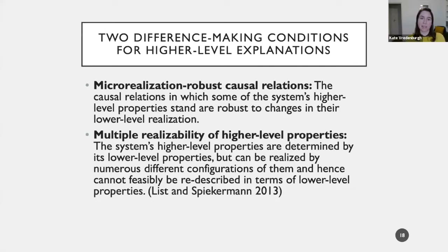To make this argument more precise, I draw on two conditions from List and Spiekermann. First, micro-realization robustness: the causal relations in which some of the system's higher-level properties stand are robust to changes in their lower-level realization. Second, multiple realizability: the system's higher-level properties are determined by its lower-level properties but can be realized by numerous different configurations of them, and hence cannot feasibly be redescribed in terms of lower-level properties.